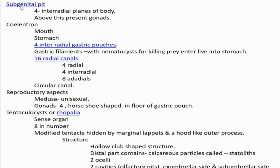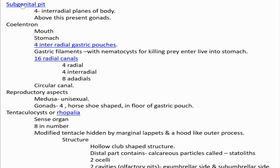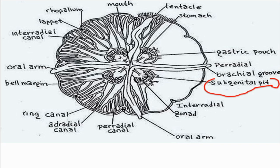The subgenital pits are also four in number, located in the interradial planes of the body. They are small pit-like holes, each located interradially — not in a radial position. These small pits are called subgenital pits, and above each pit the gonad is actually located.